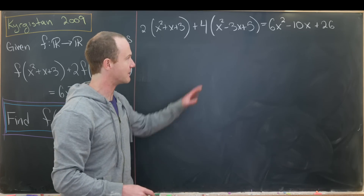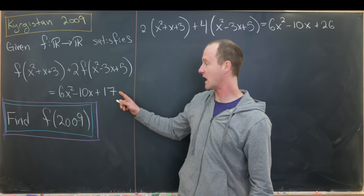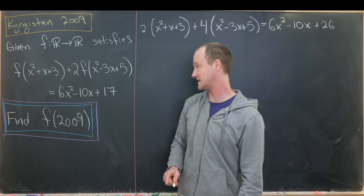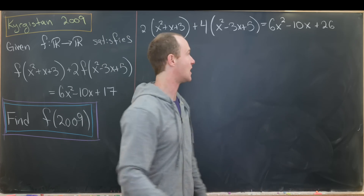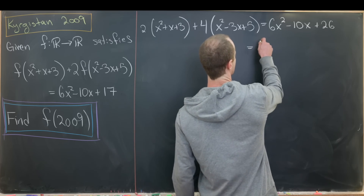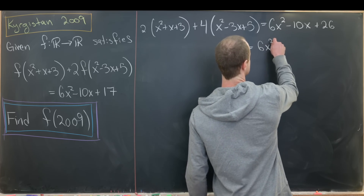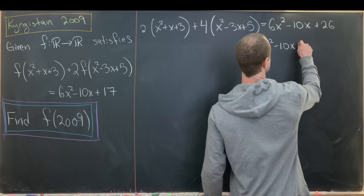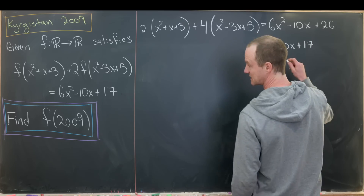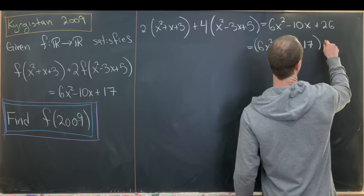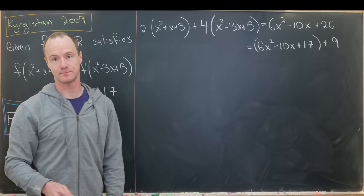Now let's compare that to what we have over here, and we'll notice that it's almost the same — we're only off by the constant term. So to highlight that, we'll write this as 6x² - 10x + 17, and then plus another 9.